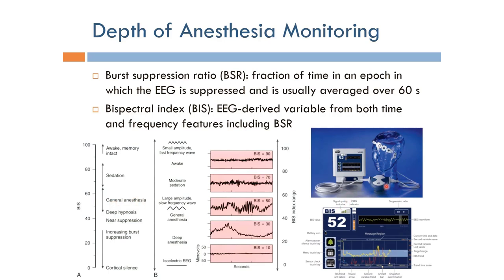Devices with EEG electrodes and a display interface are used to continuously compute the bispectral index. The doctor must monitor this value and ensure it stays within the range that is safe for general anesthesia and safe for the patient. If the BIS goes too high, the patient may become awake during the operation; if it goes too low, the patient's life is at risk. This is therefore one of the most important measures to be used during anesthesia procedures.